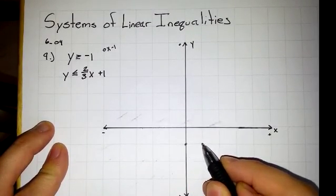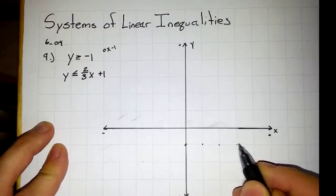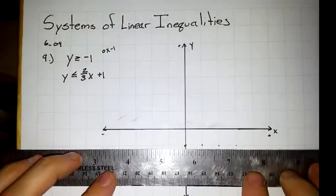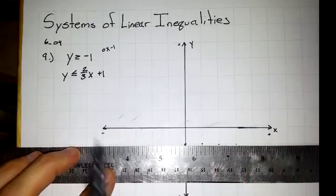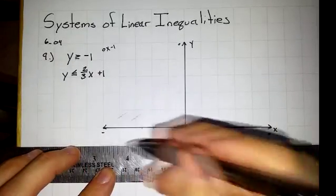So let's go up 0 and then over. This is a horizontal line. There is no angle. Y is greater than or equal to, so it's going to be a solid line.